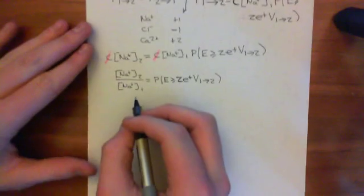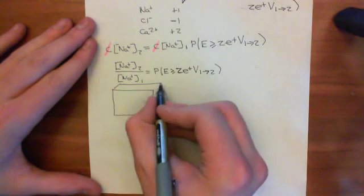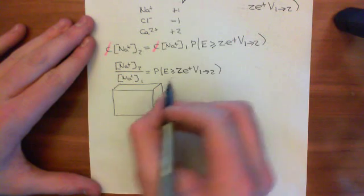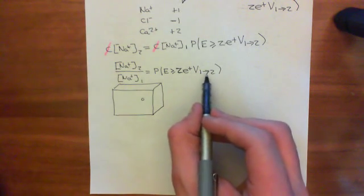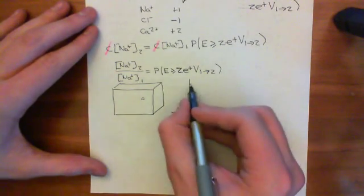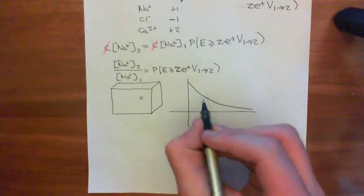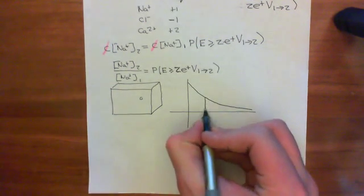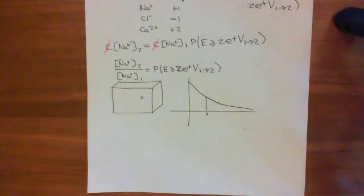Now we have to go back to the Maxwell-Boltzmann distribution. If we have a box containing sodium ions, and we want to know what is the probability that a sodium ion will have energy greater than or equal to Z times the charge of the proton times the voltage from compartment 1 to compartment 2, then the Boltzmann distribution tells us the probability density function. It tells us that if you take any point, little x, in the positive real numbers, and you want to know what is the probability density that the sodium ion you happen to pick will have energy little x, then you take a tiny little interval dx.